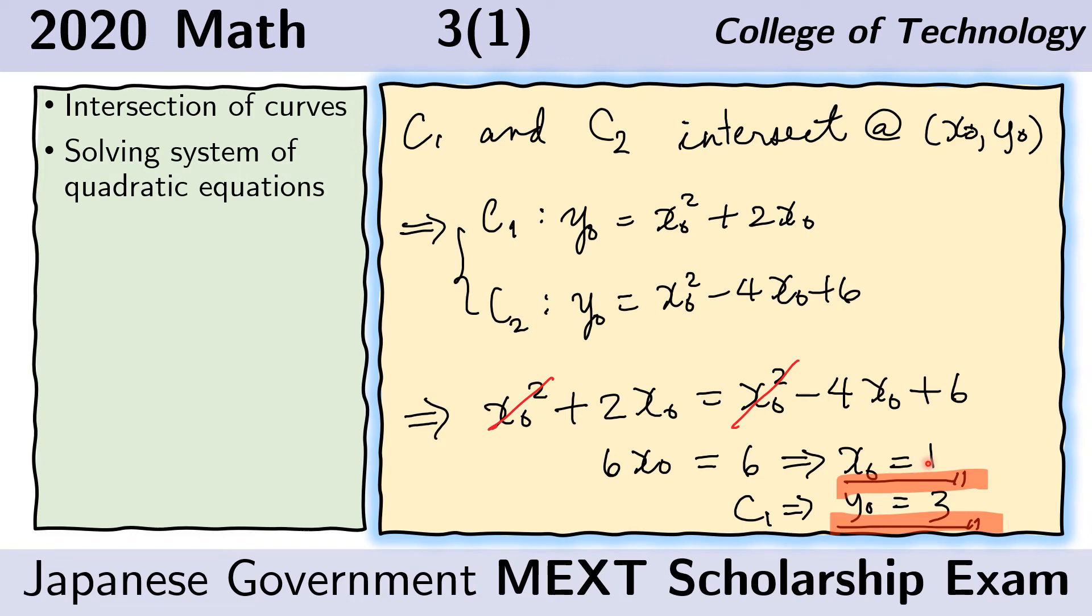And if we substitute this one to either of these two equations, we will get a value for Y sub O and Y sub O is 3.